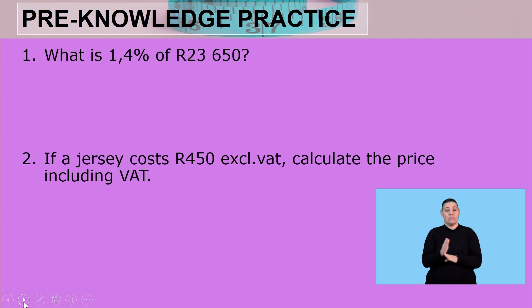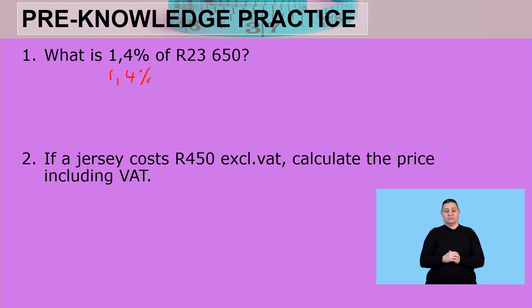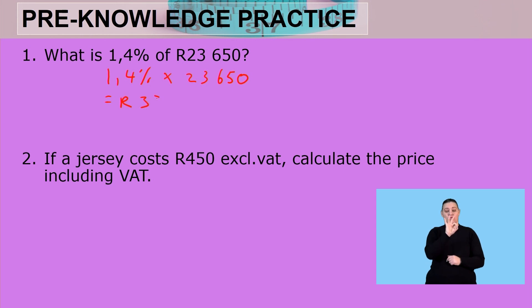Pre-knowledge practice: What is 1.4% of 23,650? We start with 1.4% — 'of' becomes 'times' the amount 23,650 — and we get 331.10.